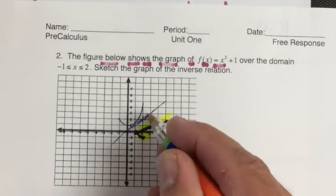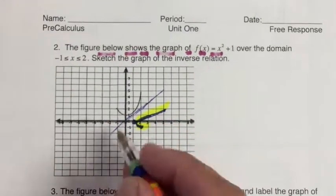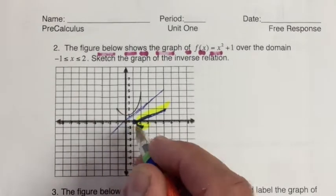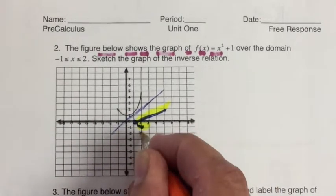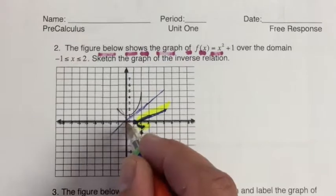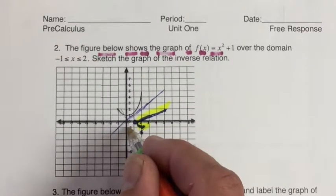And then every point on this function has a mirror over here. If you go diagonally, it makes it a little bit harder because these boxes aren't exactly square, are they?